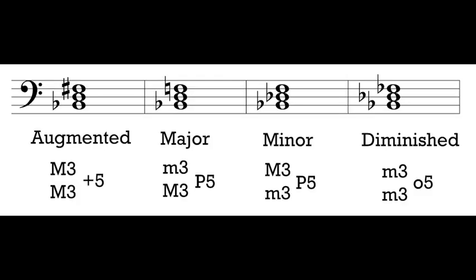A brief refresher on the intervals we see in our given triads. Here they are: augmented, major, minor, and diminished. I've labeled on this slide both of the thirds we find — the lower third between the root and the third, and the upper third between the third and the fifth — and also the type of fifth between the root and the fifth in each triad. When we're analyzing chords, we don't necessarily know what the intervals are, so we're looking to identify those intervals and see which triads match up.